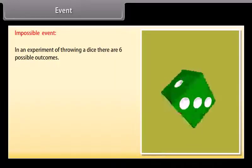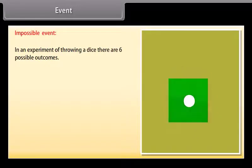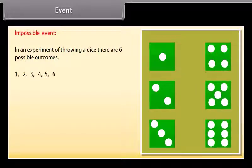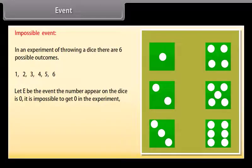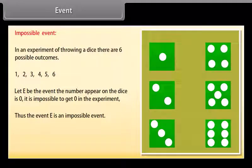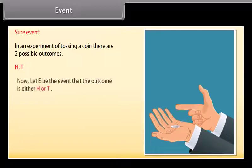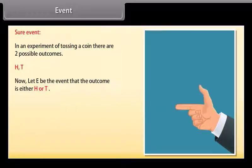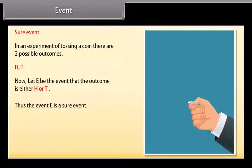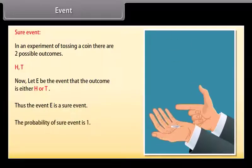Impossible event: to understand it, let's take an example. In an experiment of throwing a dice, there are six possible outcomes: 1, 2, 3, 4, 5, 6. Let E be the event that the number appearing on the dice is zero. It is impossible to get zero in the experiment, thus the event E is an impossible event. In an experiment of tossing a coin, there are two possible outcomes: H and T. Let E be the event that the outcome is either H or T. Thus the event E is a sure event. The probability of a sure event is one.